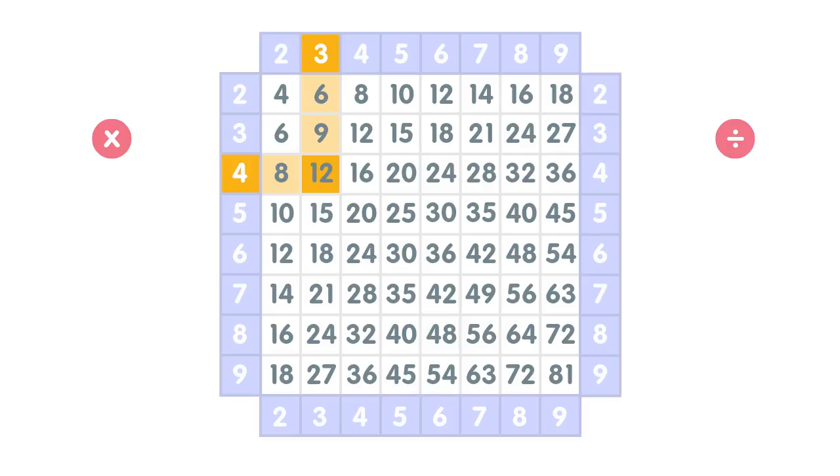There are four multiplication and division facts connected to this. Three times four equals twelve. Four times three equals twelve.